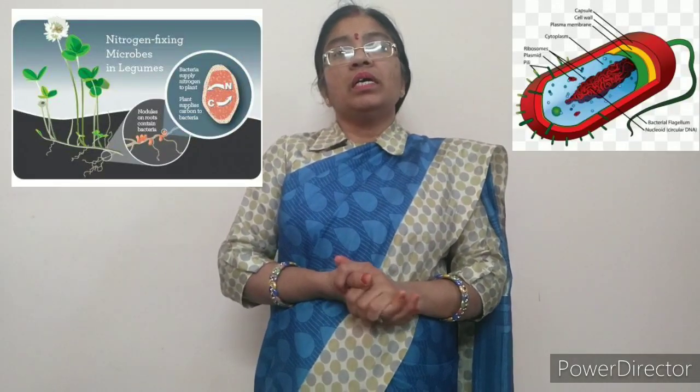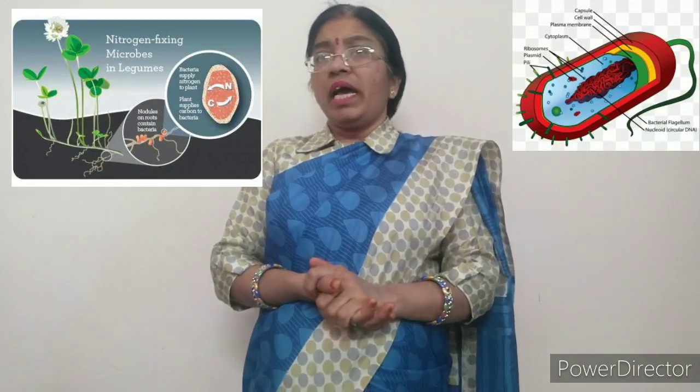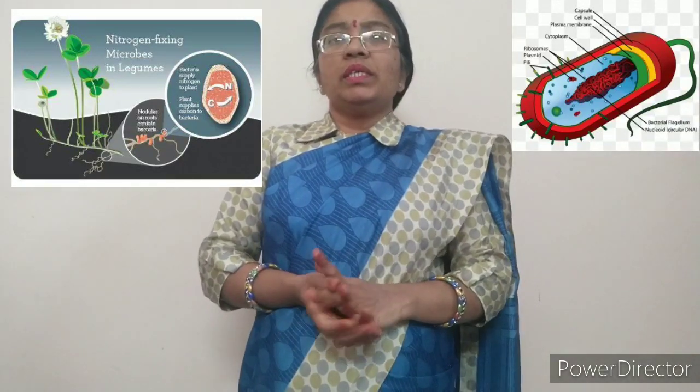Another example of symbiotic relationship is in leguminous plants — the plants of pulses. As discussed in the previous video, leguminous plants have root nodules in their roots, and in these nodules a specific bacteria known as Rhizobium lives. Rhizobium bacteria absorb atmospheric nitrogen, convert it into nitrogenous compounds, and transfer it into the soil. The plant then absorbs these nitrogenous compounds to fulfill its nitrogen requirement. This is the symbiotic mode of nutrition found in some plants.